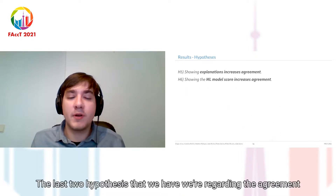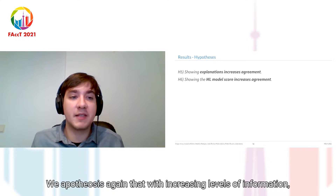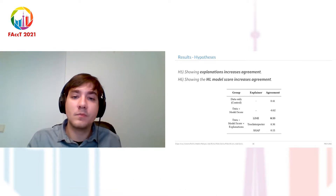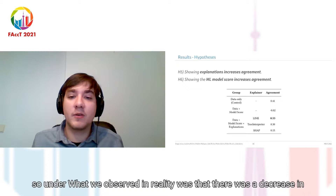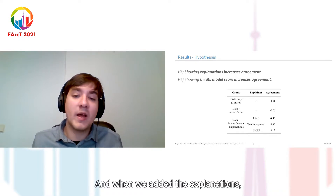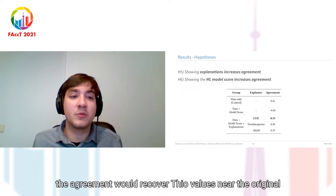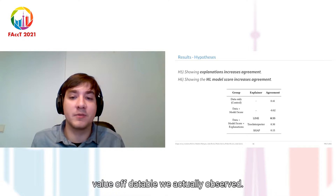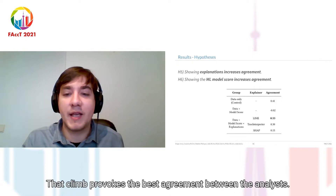The last two hypotheses were about agreement. We hypothesized that increasing levels of information would yield increasing levels of agreement. What we observed was a decrease in agreement between data only and data plus model score, and when explanations were added, the agreement recovered to values near the original data-only level. We also observed that LIME produced the best agreement between analysts.